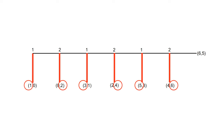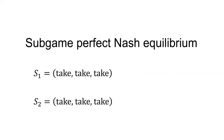And therefore, player one at the first node will take for a payoff of one instead of passing for a payoff of zero. There is a unique sub-game perfect equilibrium: S1 equals take, take, take, and S2 equals take, take, take, where S1 and S2 are the set of strategies for player one and player two respectively. In the sub-game perfect Nash equilibrium of the centipede game, player one takes at the first node.